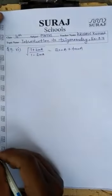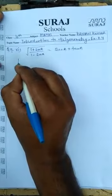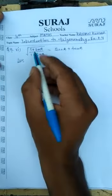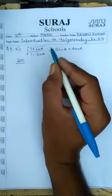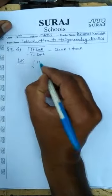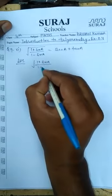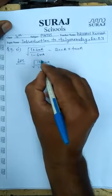Question 5, Part 6. Take LHS. The left hand side is the square root of 1 plus sin A upon 1 minus sin A.